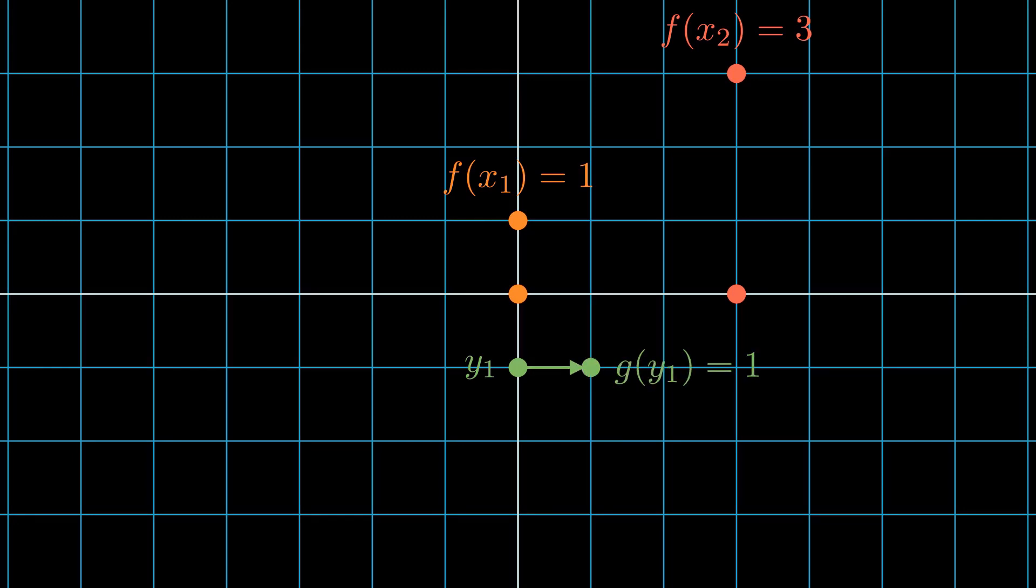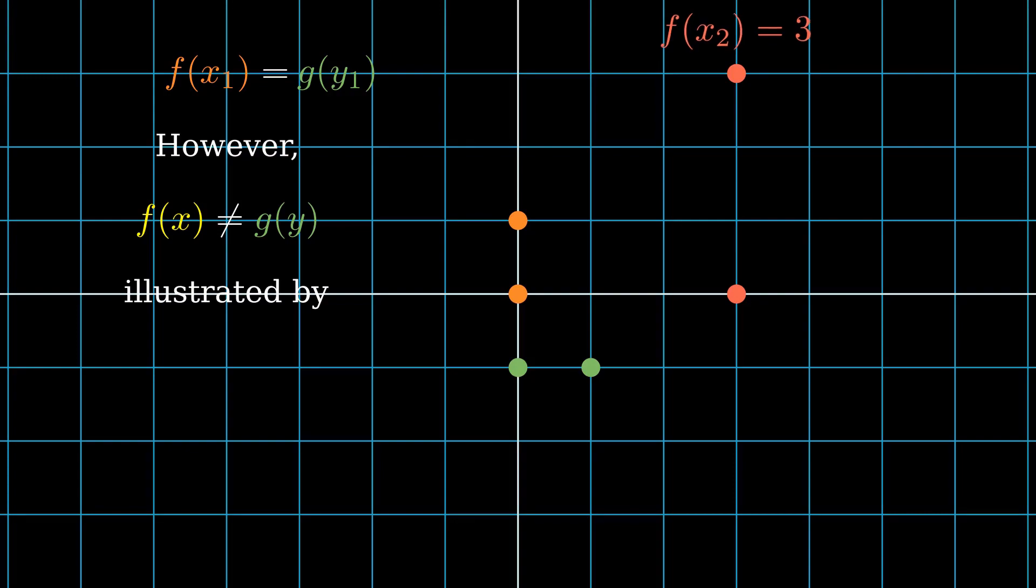Notice, however, that f at x₂ does not equal g at y₁. And so, f for all of x and g for all of y cannot be equal so long as the functions vary.